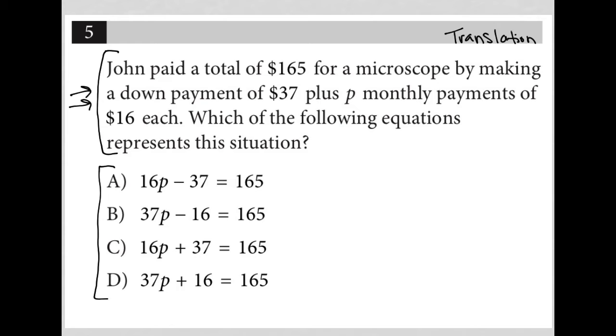The first sentence here says John paid a total of $165 for a microscope by making a down payment of $37 plus P monthly payments of $16 each.